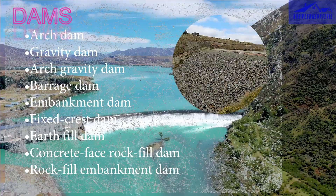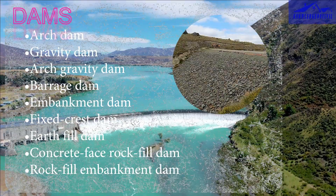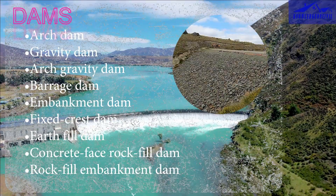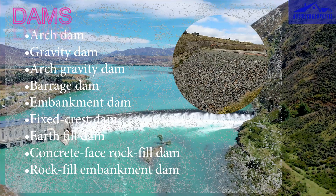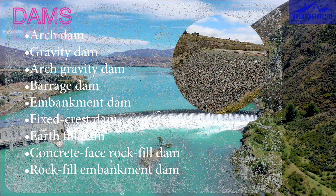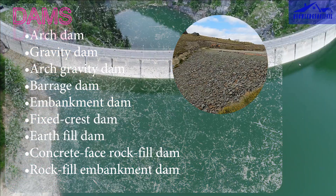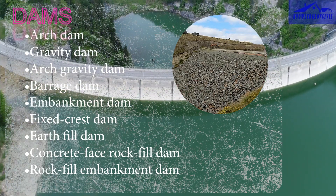Rock fill embankment dams are built using a combination of rock and earth. They use rock for the central core and outer layers, providing stability.